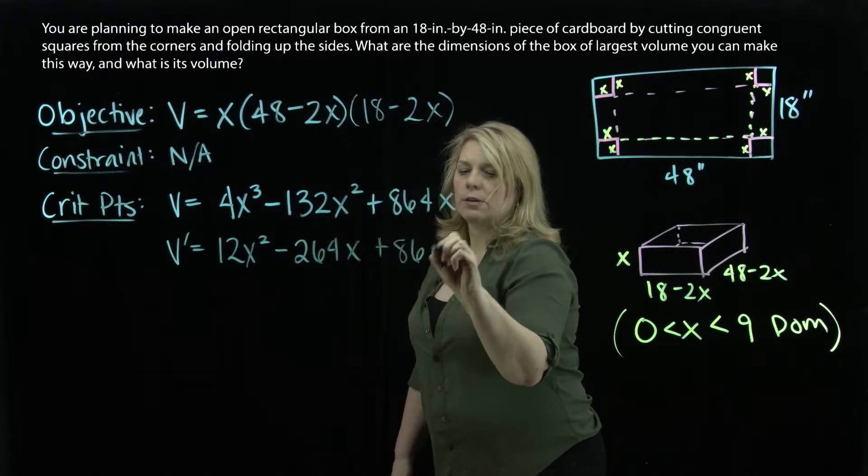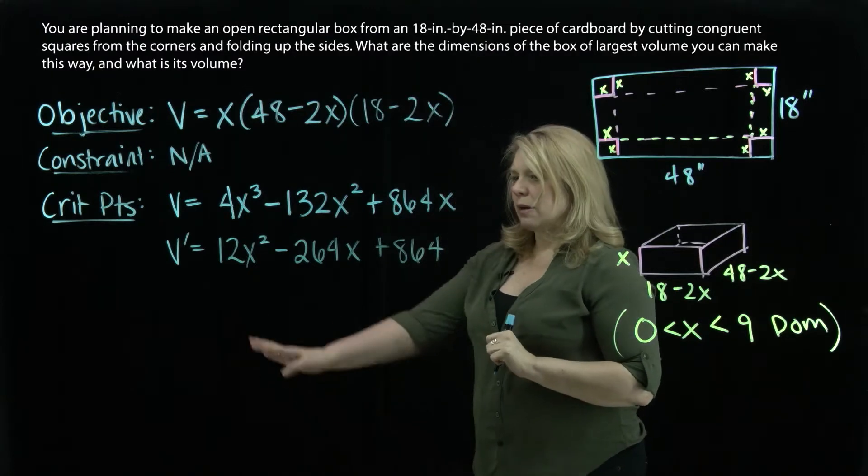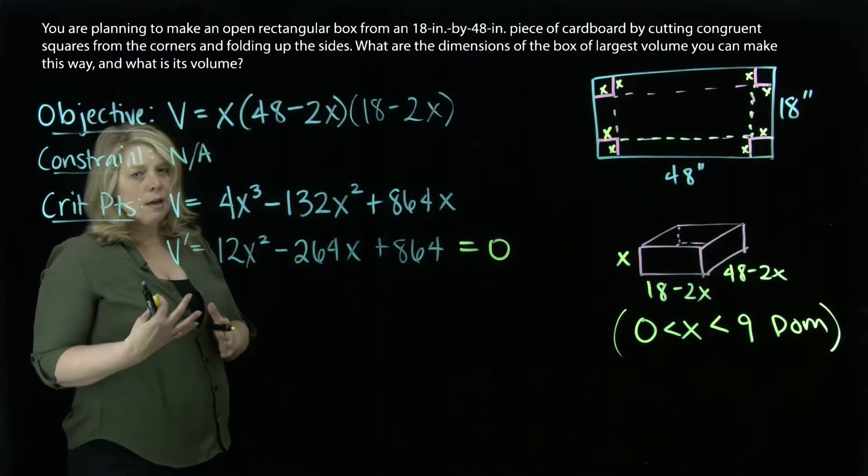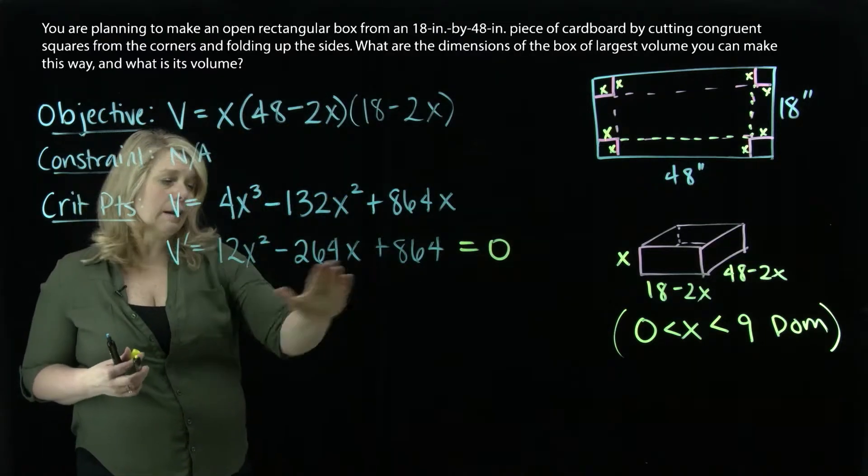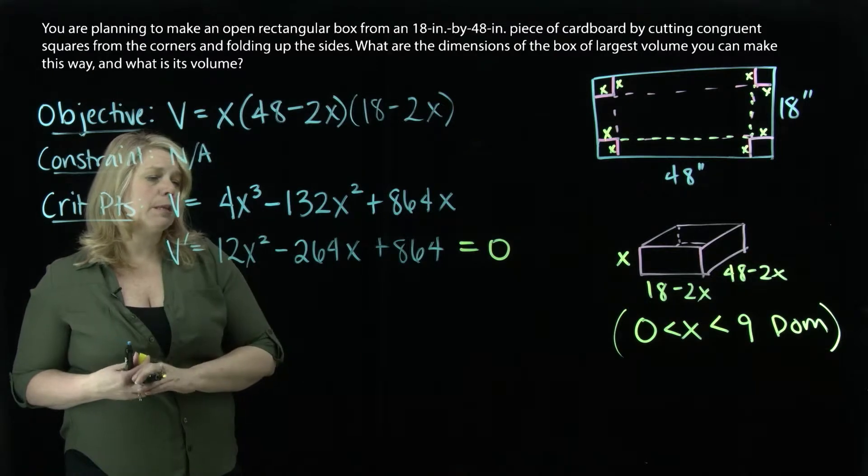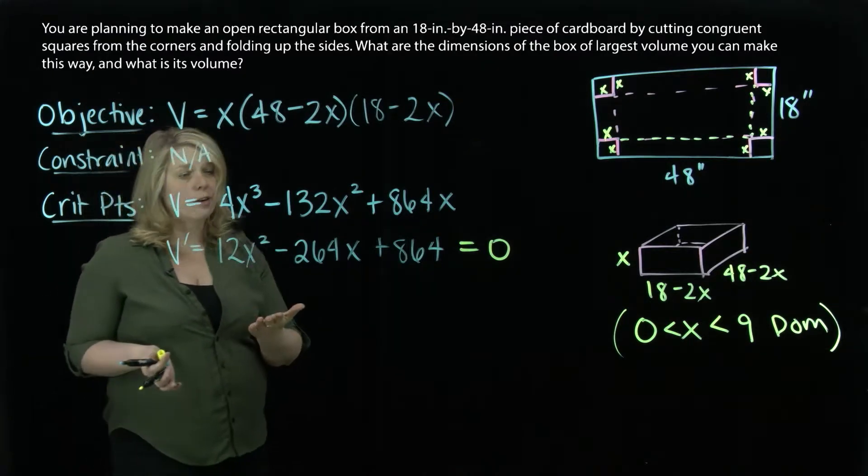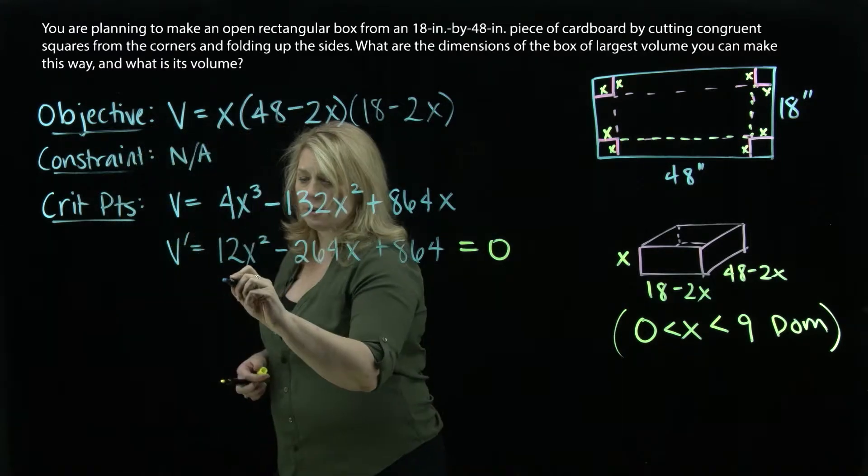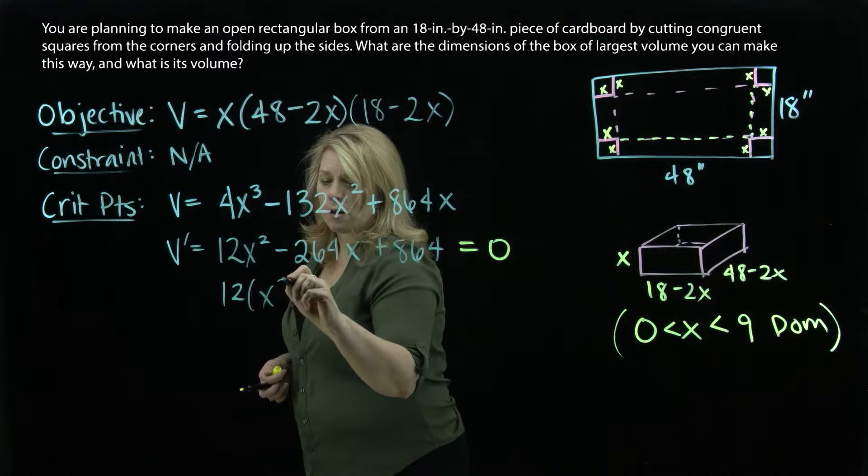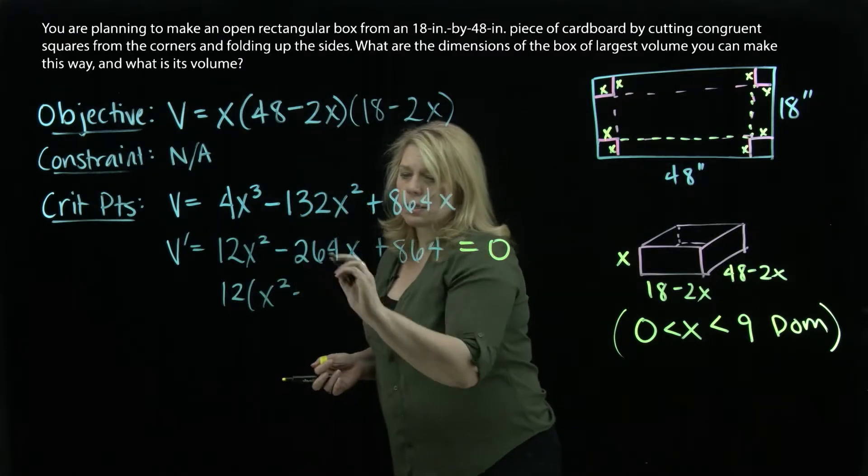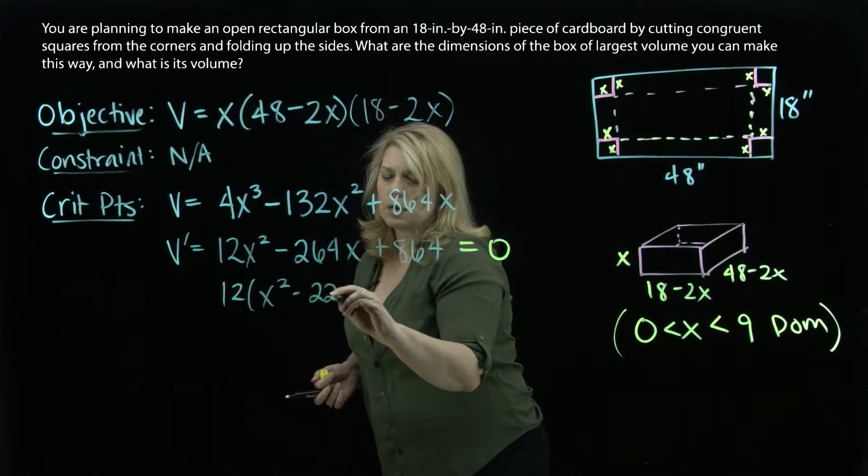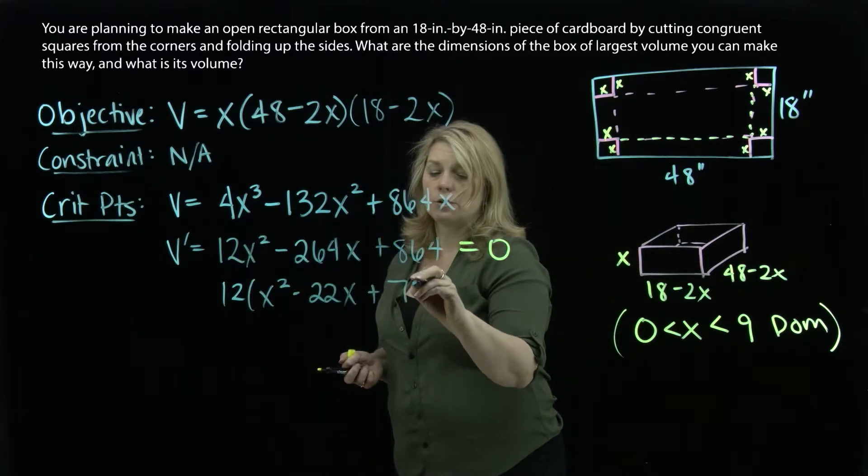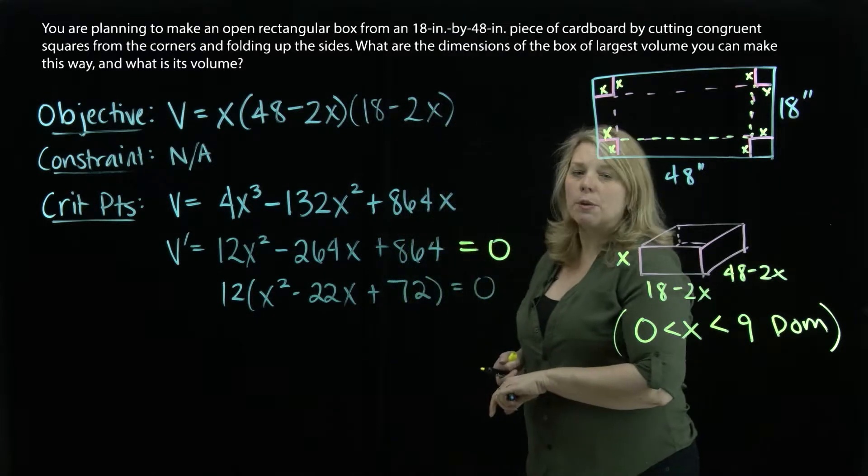12x squared minus 264x plus 864. I want to set that derivative equal to 0 and solve for x. I can factor some things out from this point. This is quadratic. So if you can't factor, you could use quadratic formula to help you with that. This one does factor. There is a 12 that I can factor out of all of this. 12 goes into 264 22 times. And 12 goes into 864 72 times. So that helps with the algebra a little bit.